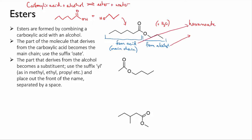And the other part, which used to be the alcohol, is named in the same way as an ordinary alkyl substituent. So with three carbons, it would be called propyl. And then you put these two parts together, and the full name is propyl hexanoate.